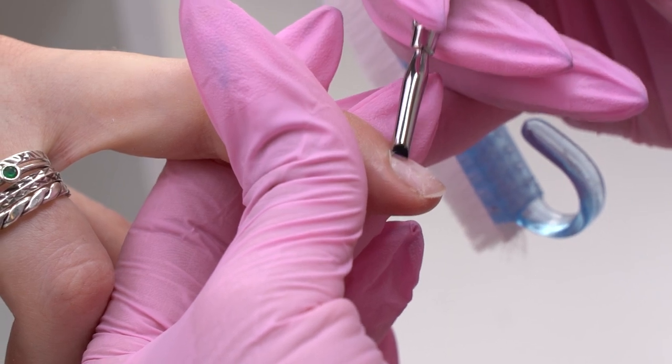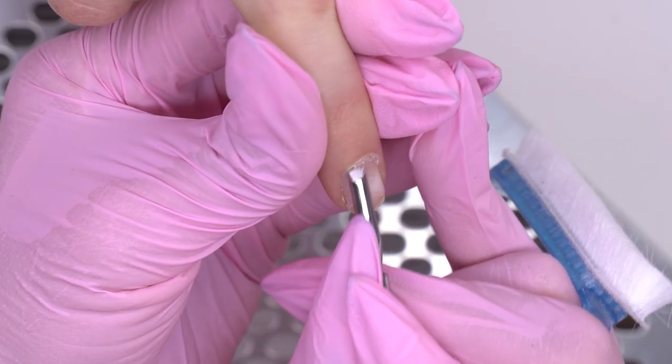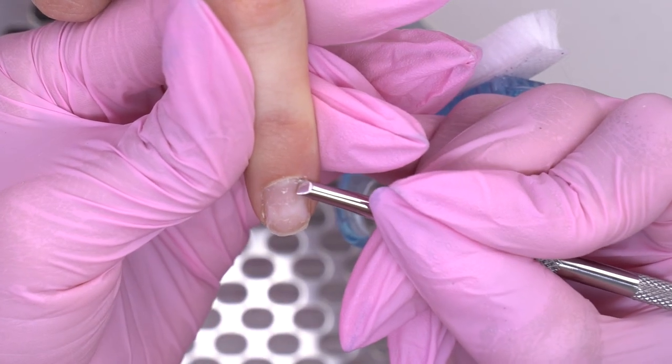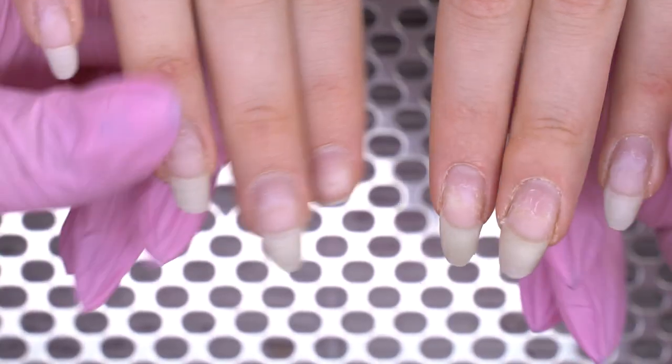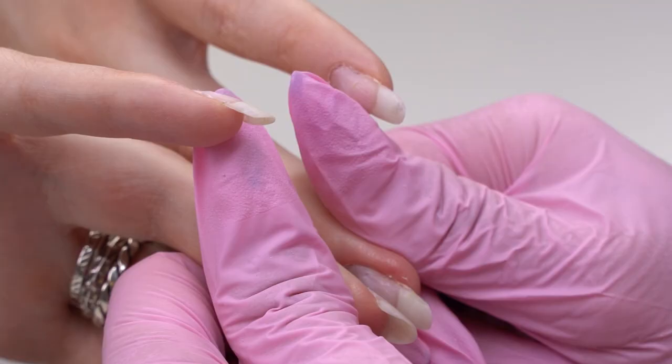To file off the length, I find the shortest nail and start filing with it.